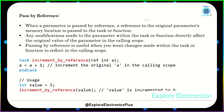Pass by reference: when a parameter is passed by reference, a reference to the original parameter's memory location is passed to the task or function. Any modifications made to the parameter within the task or function directly affect the original value of the parameter in the calling scope. Passing by reference is useful when you want changes made within the task or function to reflect in the calling scope.